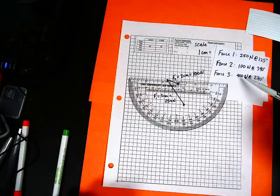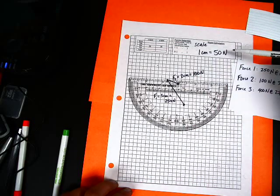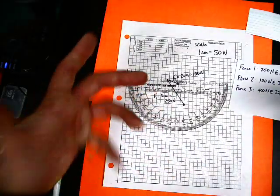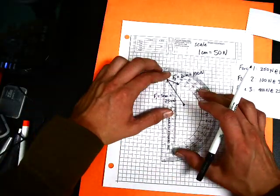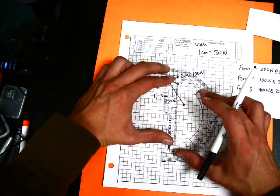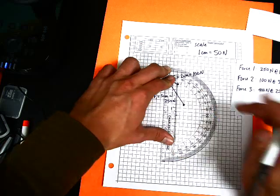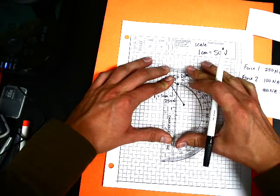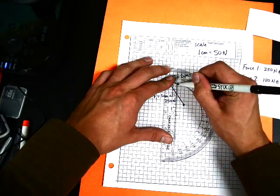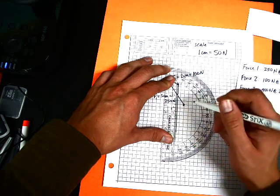And now we have 400 Newtons, which using our scale of 50, again, 50 times blank equals 400, 50 times 8 equals 400. So it's got to be 8 centimeters long. We can get a little more accurate than that. 8 centimeters.